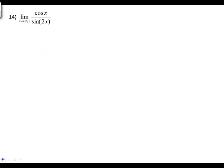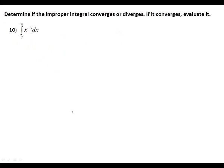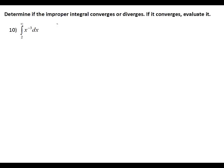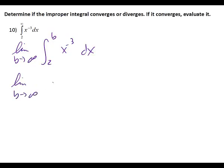Let's also do number 10. Improper integrals. We're going to determine if it converges or diverges, and if it converges we need to evaluate it. Where's the improper part? What am I going to substitute B in for? Infinity. So we're going to go from 2 to B of x to the negative 3 dx, with the limit as B approaches infinity.